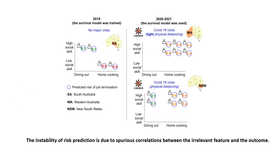Theoretically, existing survival analysis methods could be used to predict the risk of job termination for workers with disabilities. However, this method assumes a similar distribution between training and unseen data, which may not be true in real situations. This figure illustrates that a survival analysis model was built in South Australia in 2019 before the COVID-19 pandemic. The model was then used for other states in the country during the COVID-19 crisis, and it produced unstable predictions.